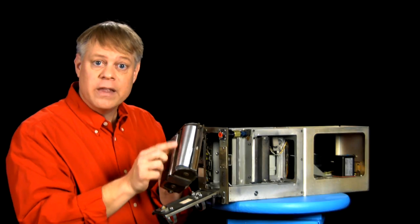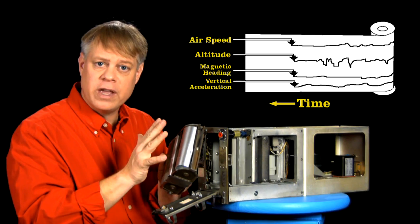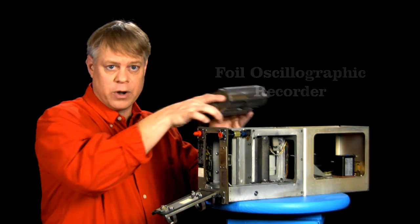Inconel steel. This metallic foil records flight parameters. They're engraved or scratched onto the Inconel sheet. In fact, the real name for this device is a foil oscillographic recorder.